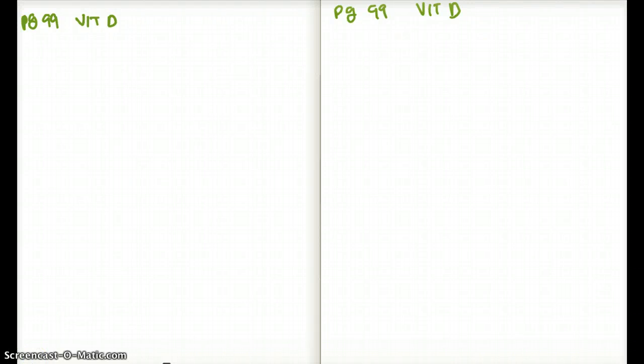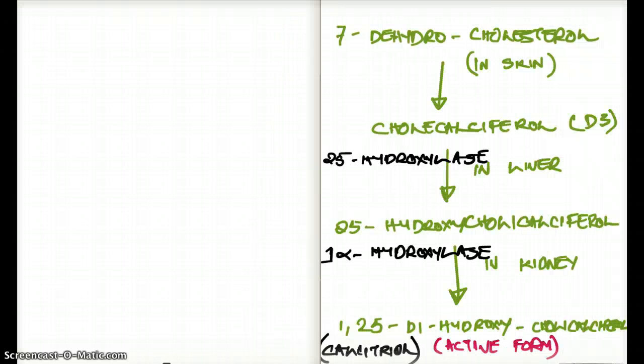Let's talk about how vitamin D is made in our body. Vitamin D is made up of cholesterol. Cholesterol is present in our skin, in our cell membranes, all over our body. But in our skin, cholesterol is present in the form called 7-dehydrocholesterol. When sun hits our skin, 7-dehydrocholesterol is converted to cholecalciferol. Cholecalciferol is D3.